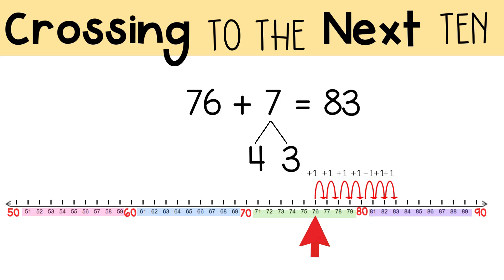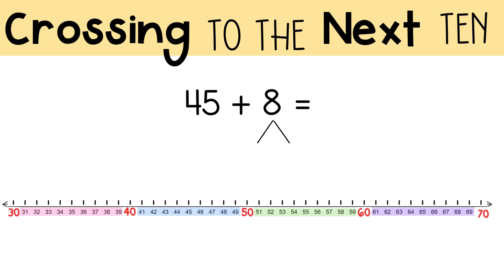Let's try one more. Follow the same steps as the last problem to solve 45 plus 8. To solve 45 plus 8, you needed to make 5 jumps to get to the next 10, which is 50.